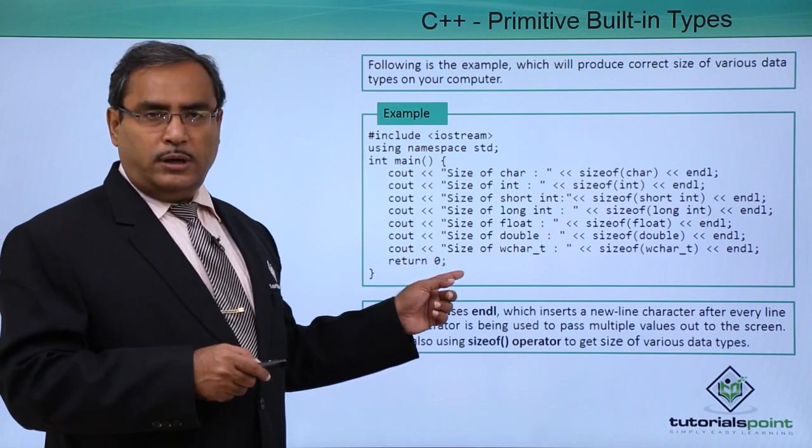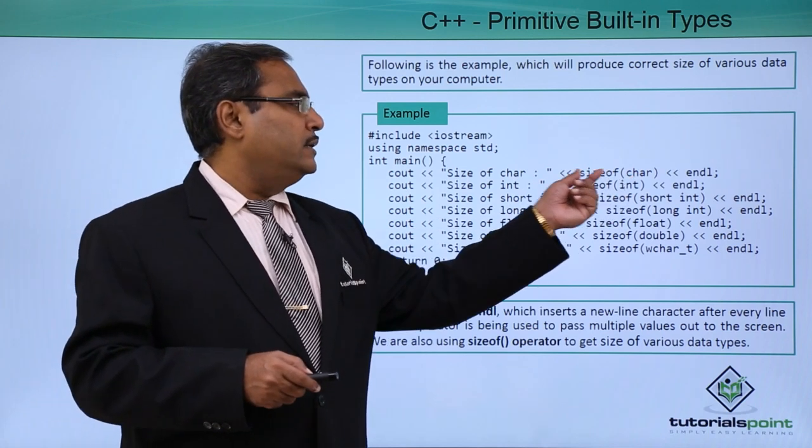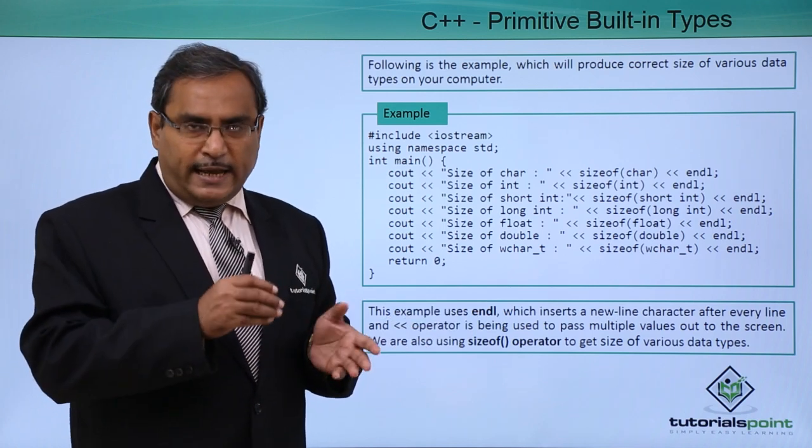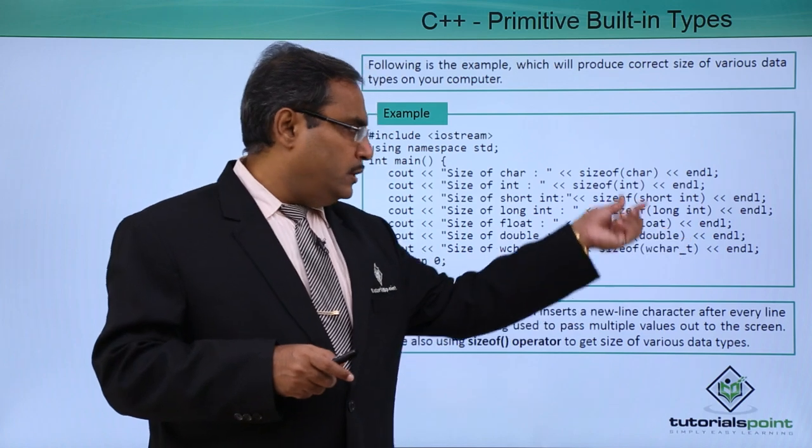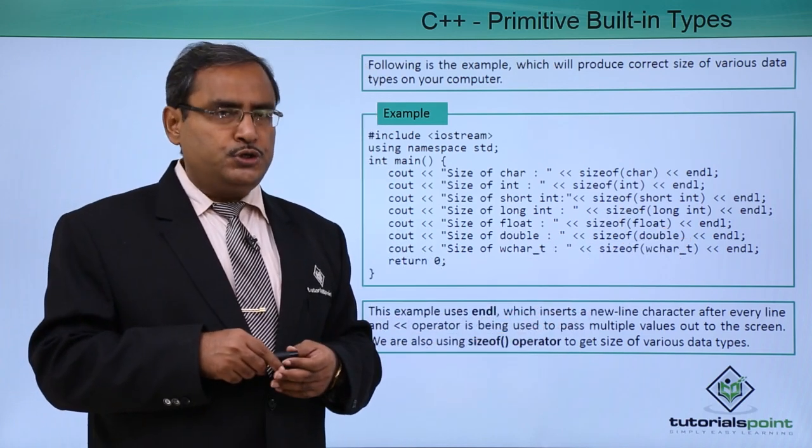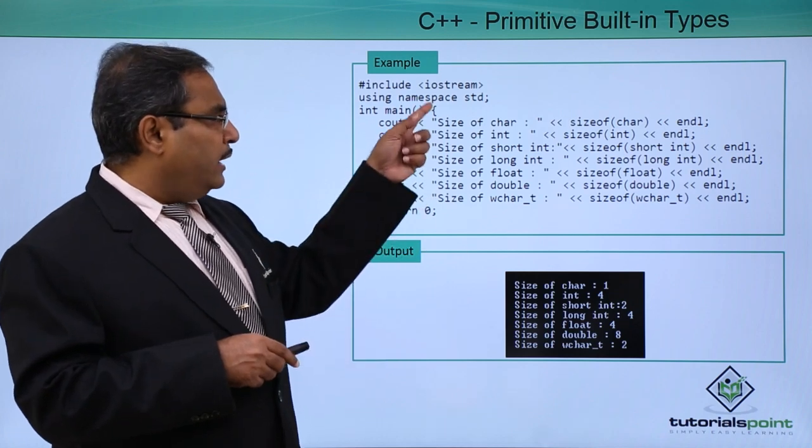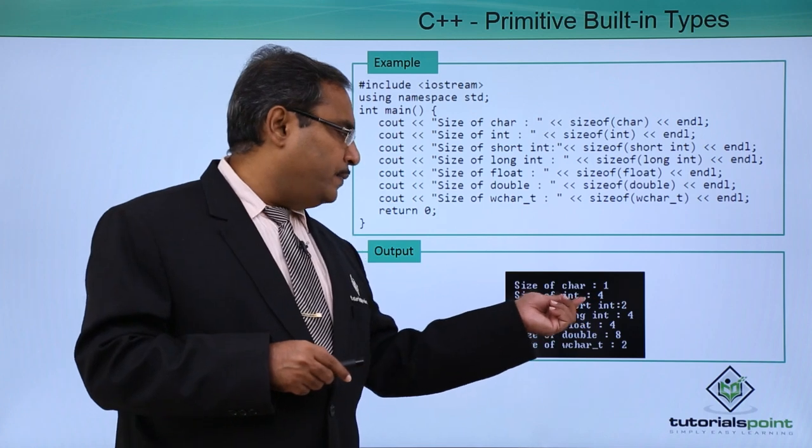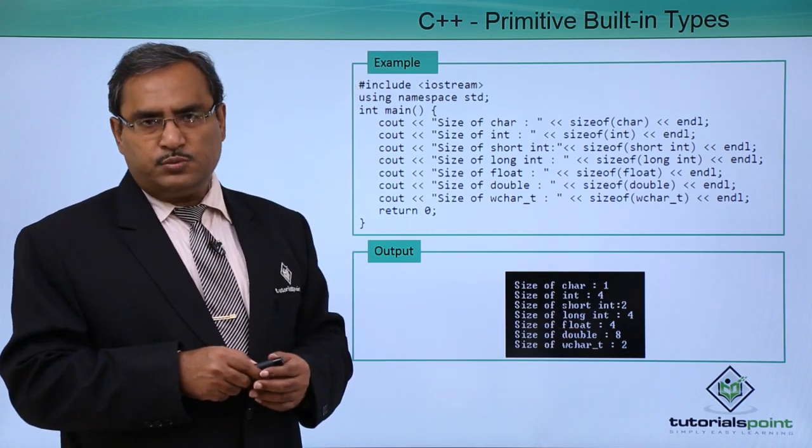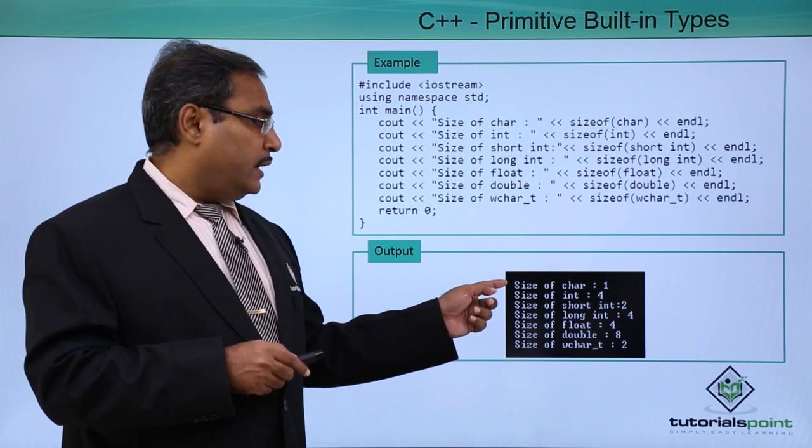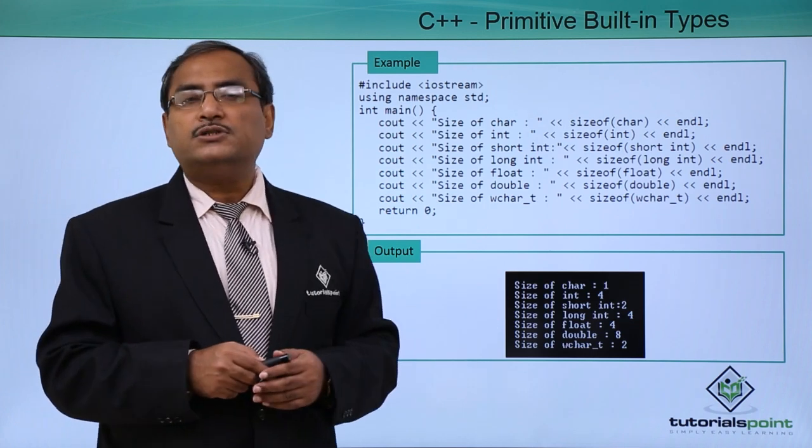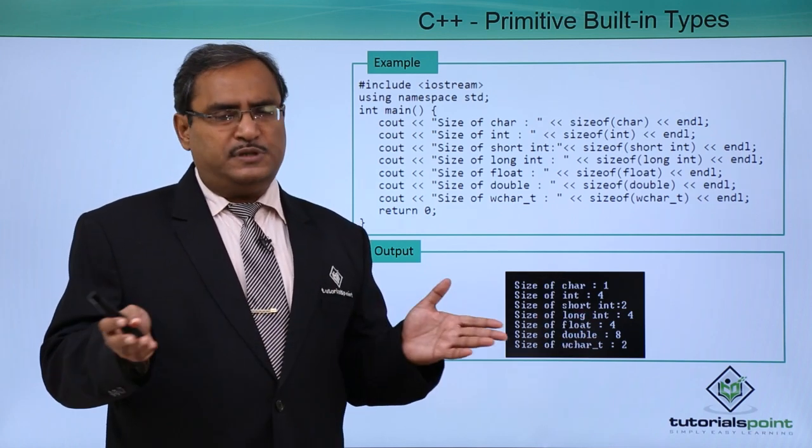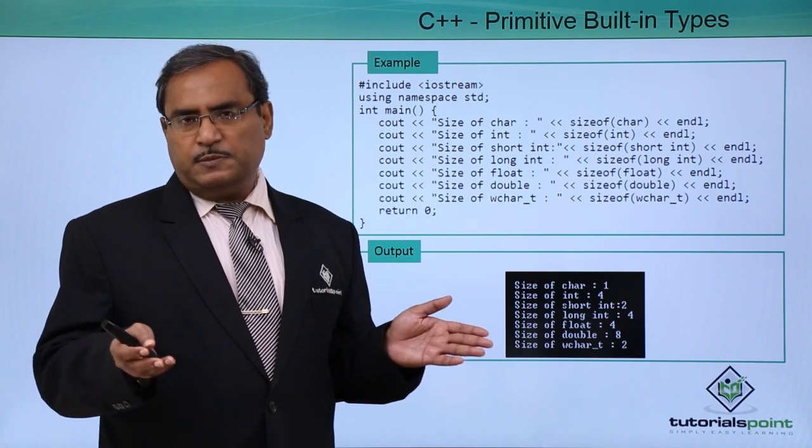Here we have one program where we have written size of char, size of int. We know sizeof is nothing but one operator and that has been applied on the data types. Let me show you what will be the output of this program. If you run this respective program, here is the output for us. Size of character will be 1, size of int will be 4. In this way, we have size of character, int, size of short, long, and so on. Now, whatever data type sizes you have mentioned, that is available in Dev C++, in your GNU C++, and so on.